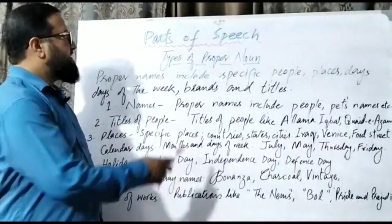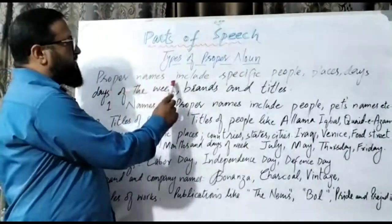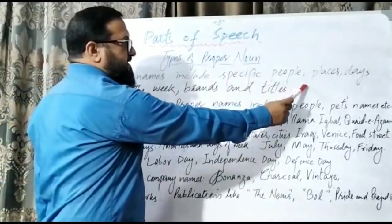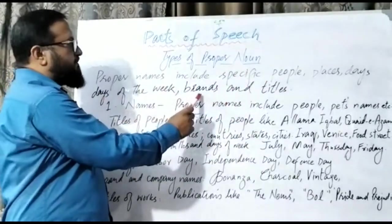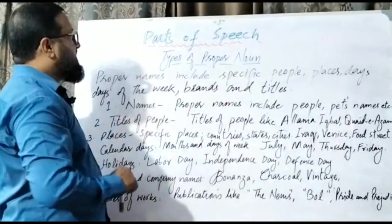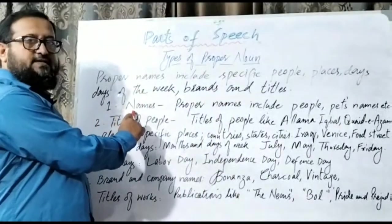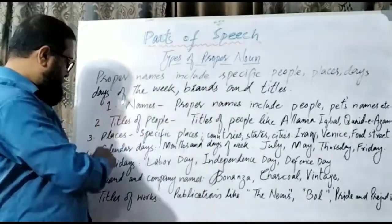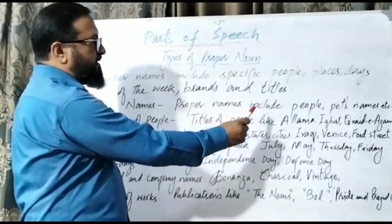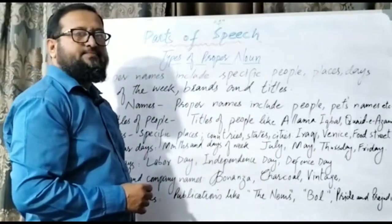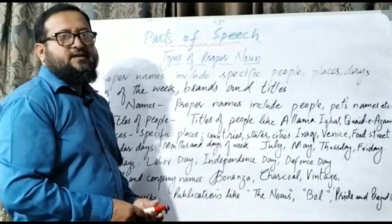Now let's see the types of proper nouns. Proper names include specific people, places, days, days of the week, brands, and titles. There are basically seven types of proper nouns. The first type is Names — these are proper names that include people's or pets' names, like James, Alia, or Arsalan.